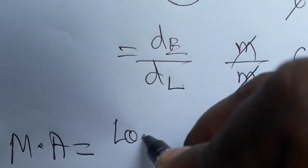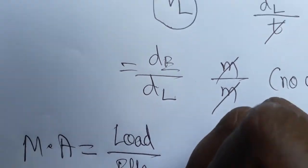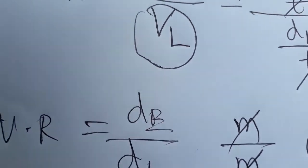Mechanical advantage is load by effort. And velocity ratio will be distance of effort arm by distance of load arm. Thank you.